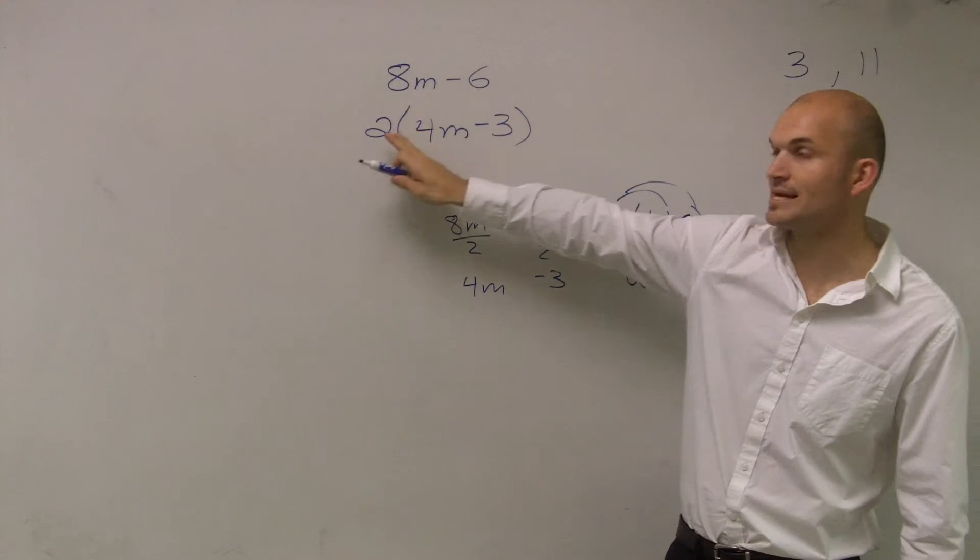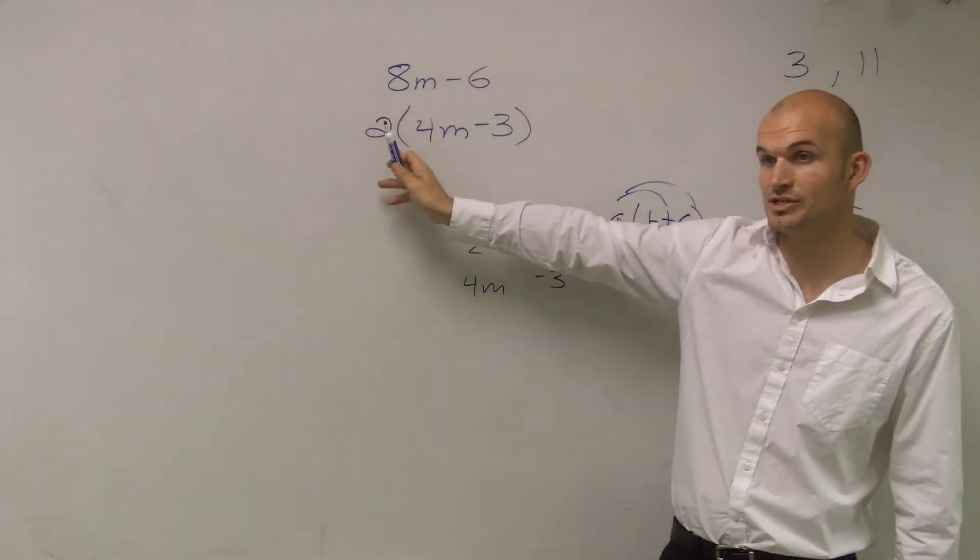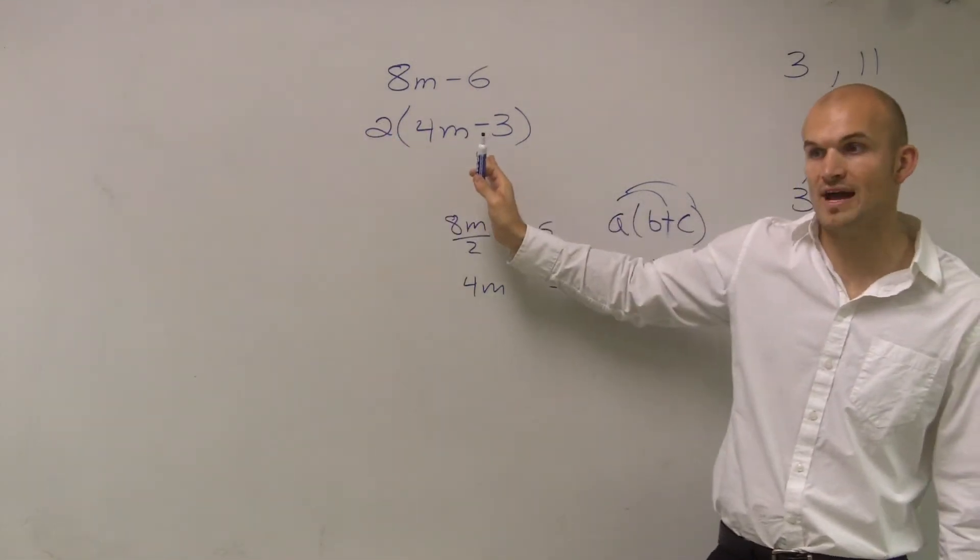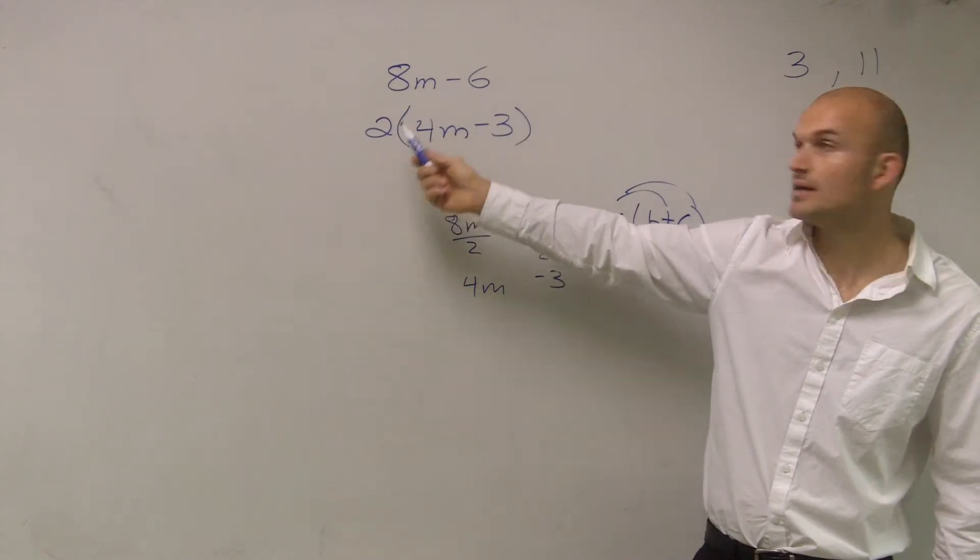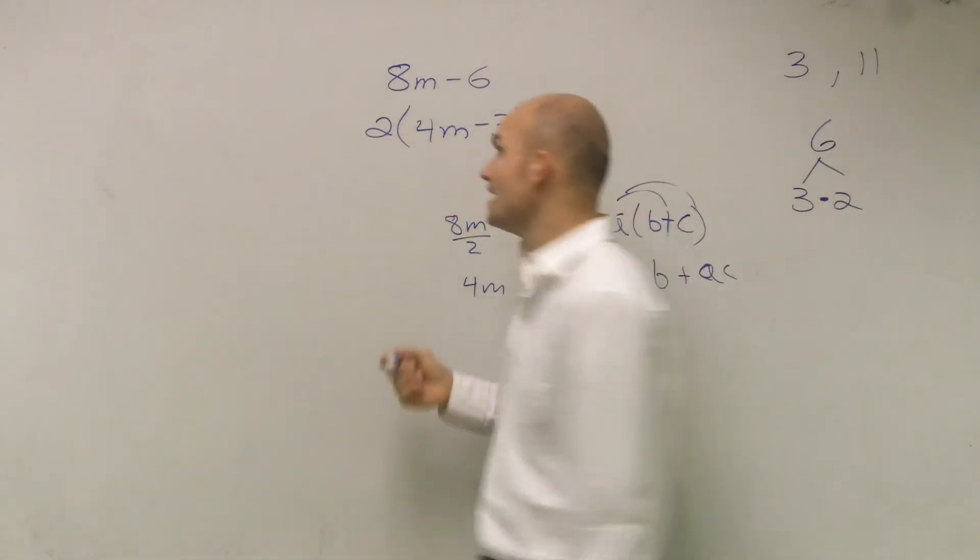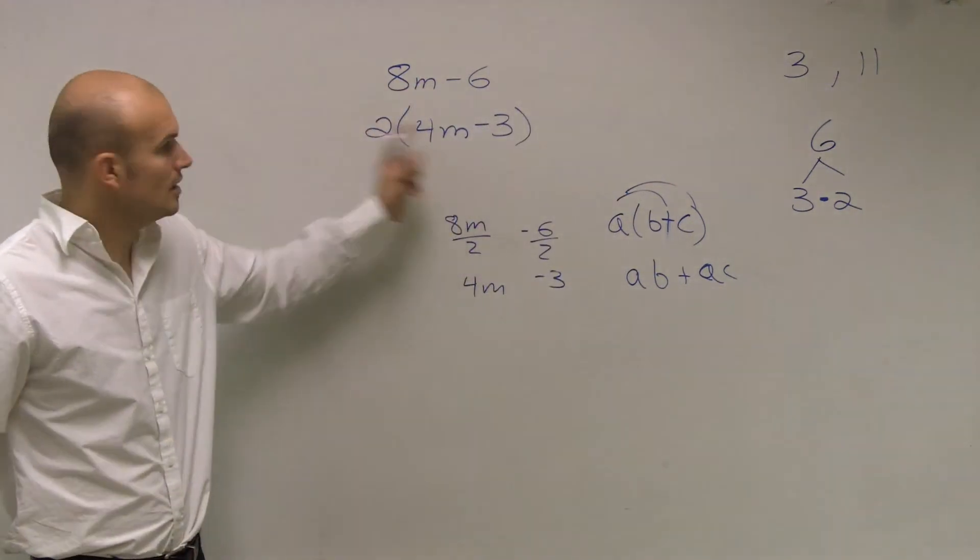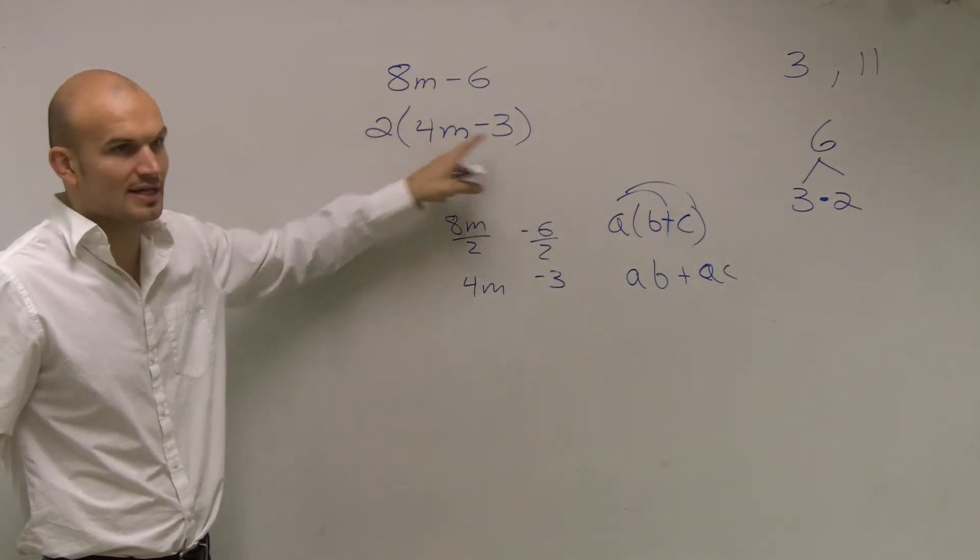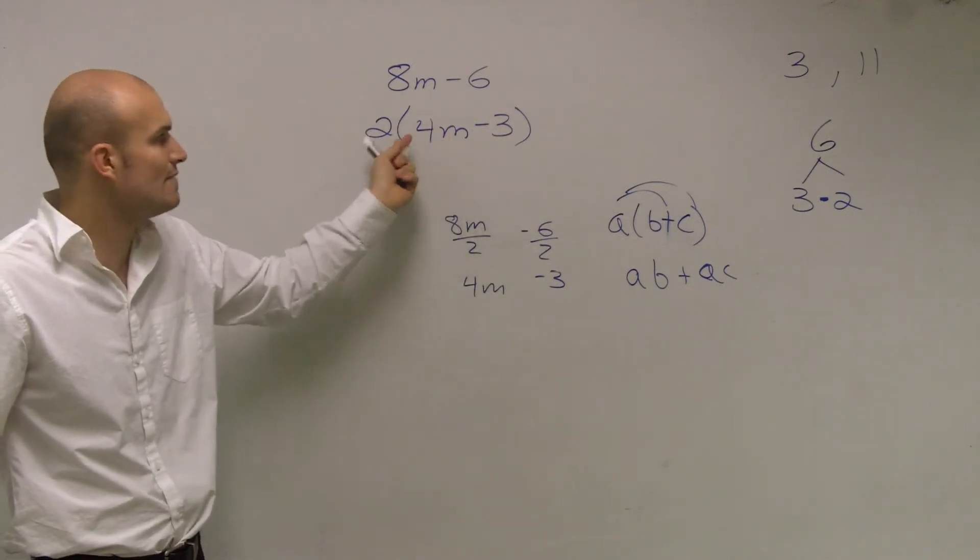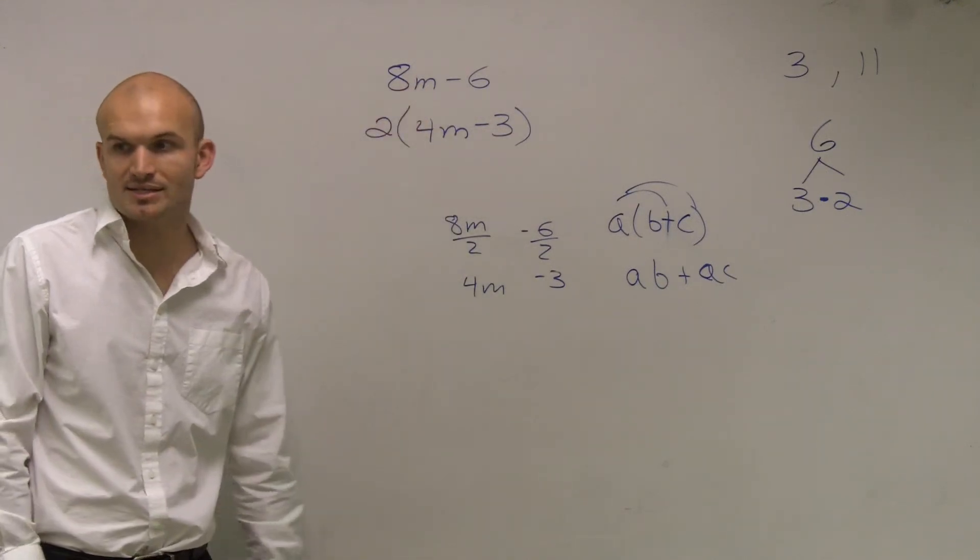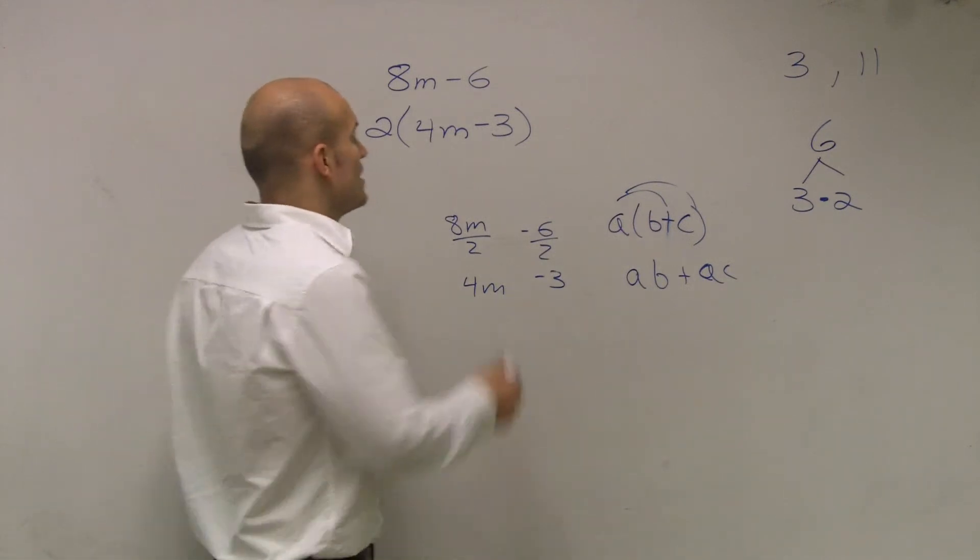Now, have we written this number as a product, a multiplication of two factors? Yes. It's now a product of two prime factors. These don't share anything in common, we can't factor anything else out of here. And we can't factor anything out of our 2. So these are our two prime factors of 8m minus 6. So we've now written it as a multiplication problem.